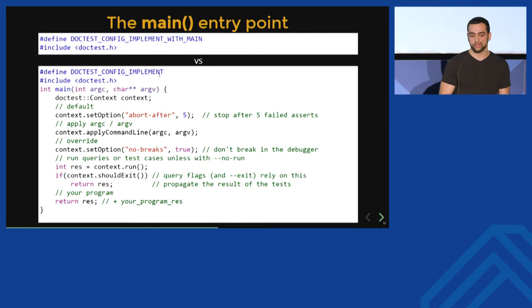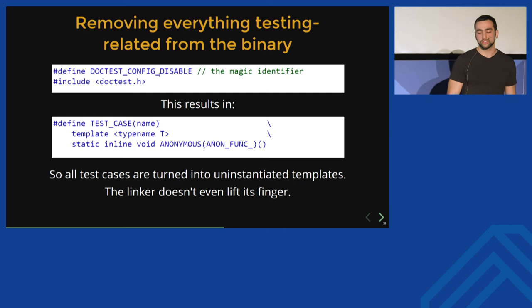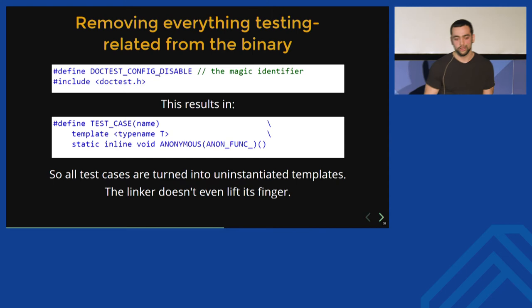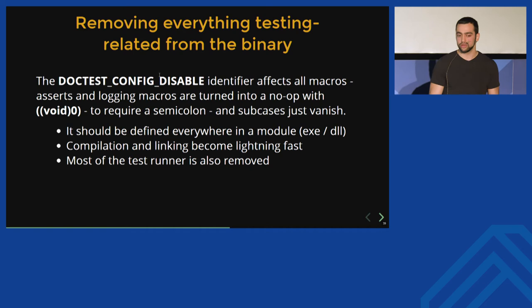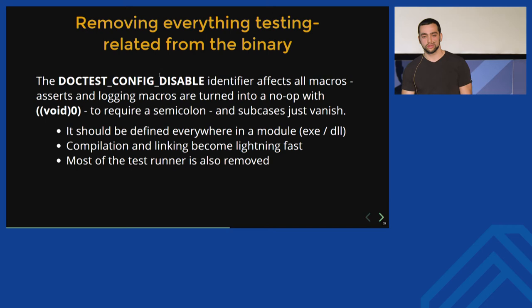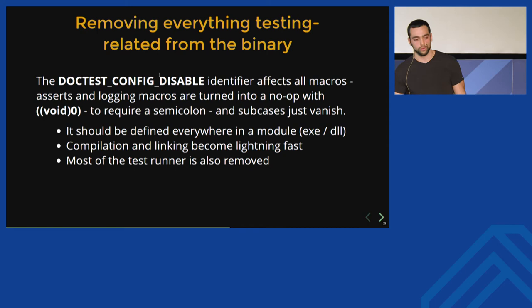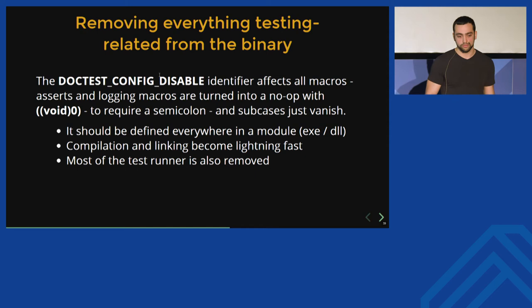If we are mixing tests and production code, we might want to remove them from the final build shipped to customers. We define the config disable identifier globally, and it turns all test cases into uninstantiated templates — so even in debug builds they are never present in the binary. Compile times and linking become lightning fast. We can take it a step further because even if the test case is never instantiated as a template, it still has to be parsed. So we can affect even the assertion macros with this identifier, turning them into a no-op using `((void)0)` to swallow the semicolon. Most of the test runner is also removed from the binary — literally it's as if no tests were written at all.